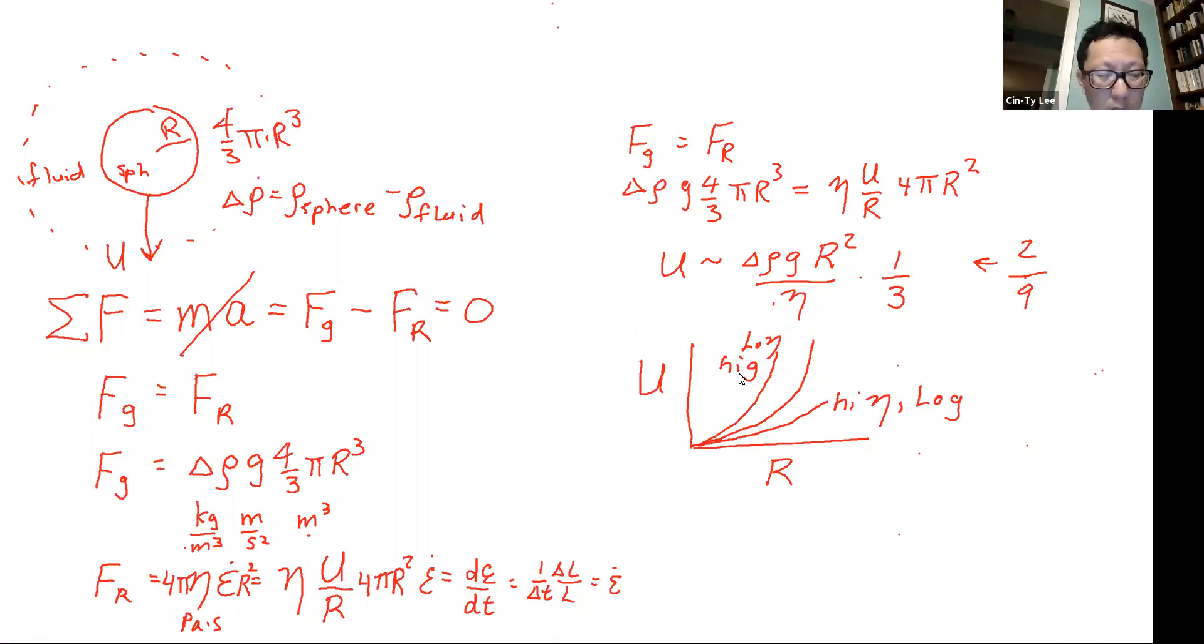So if there's anything to remember from here, the most important things are u scales positively with r squared and it does inversely related to viscosity. And in the next chapter, I will talk about Reynolds number and we'll get finally to convection. And that's all right.